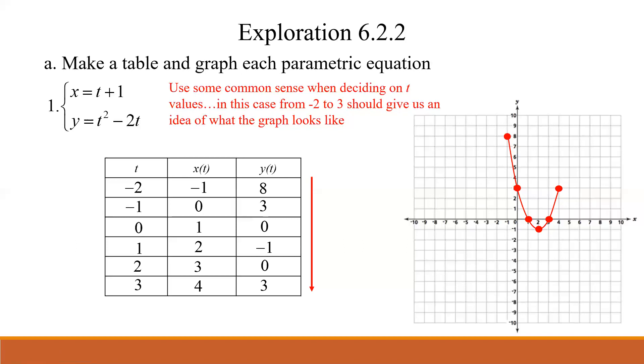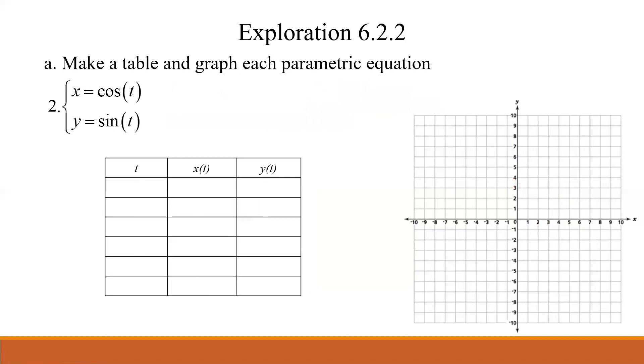How about if we look at number two? Well, if we look at number two, now we have x equals cos t and y equals sine t. What would a reasonable range of t values be for this one? Well, if you go back to your trig days, your unit circle, I think we can go from zero to two pi because we know that's periodic. So I think zero to two pi is going to give me everything I need. I don't need to get super detailed like pi over six and pi over four. I think we're going to be okay with just the main points, pi over two, pi, three pi over two, two pi.